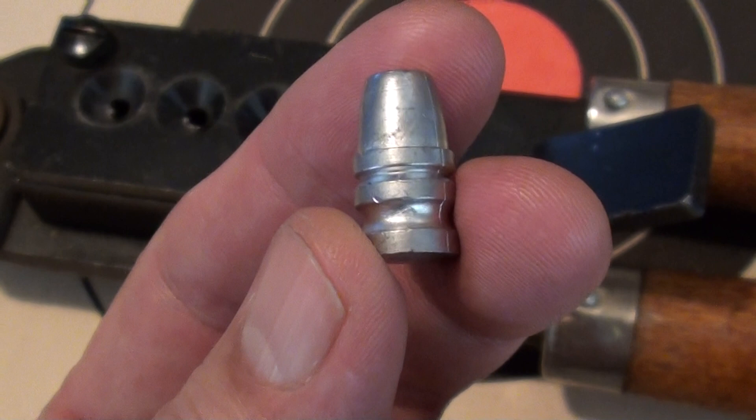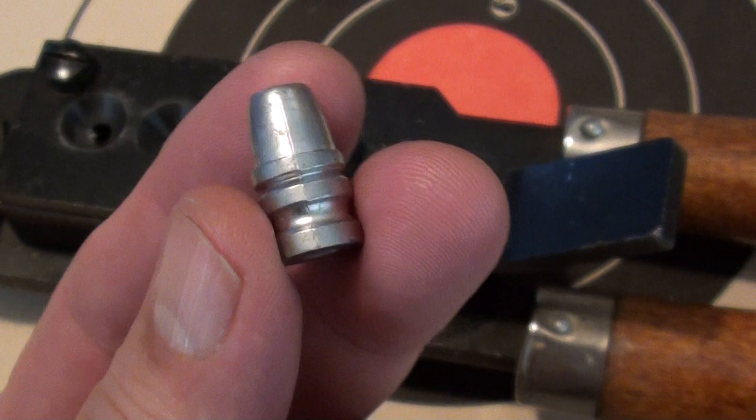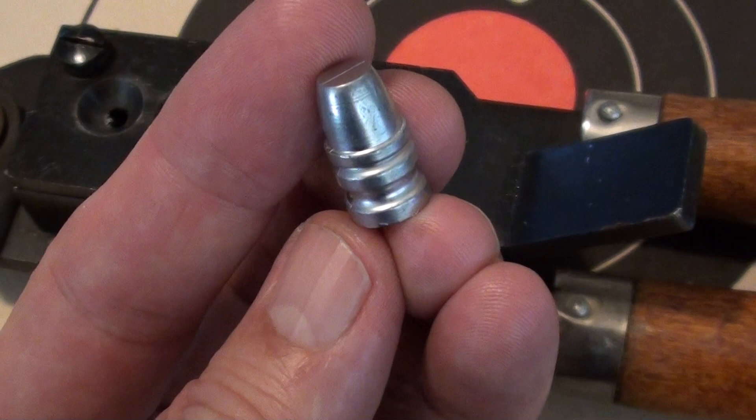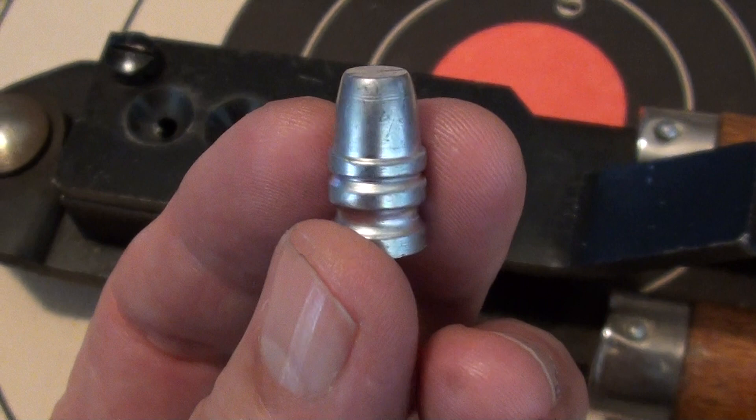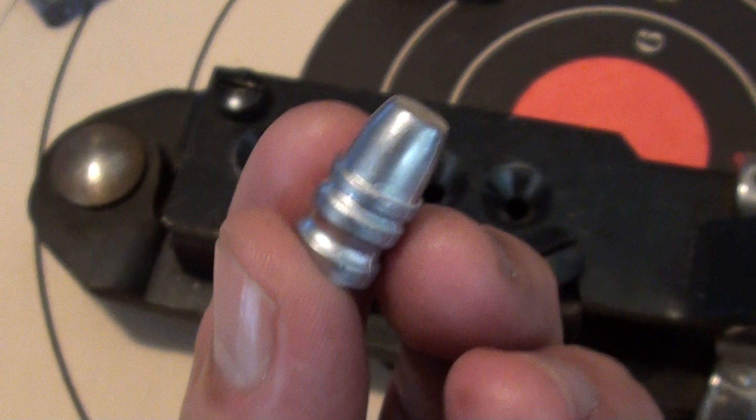Especially when they're cast hard, which all Keith bullets should be cast hard. This can be accomplished by a higher tin and antimony content, especially antimony, because the tin just helps it cast well, the antimony hardens it. But also by water quenching, so by water quenching we can actually use a little less tin and antimony to preserve our supplies of those precious alloys.